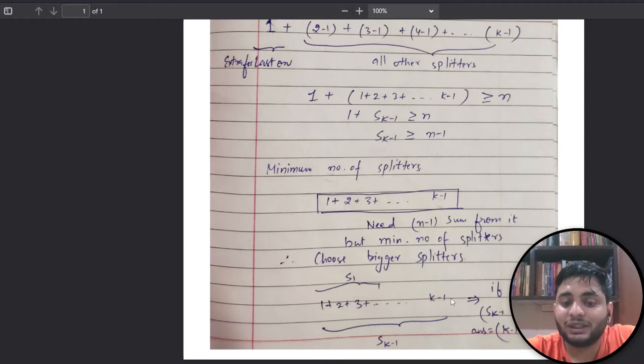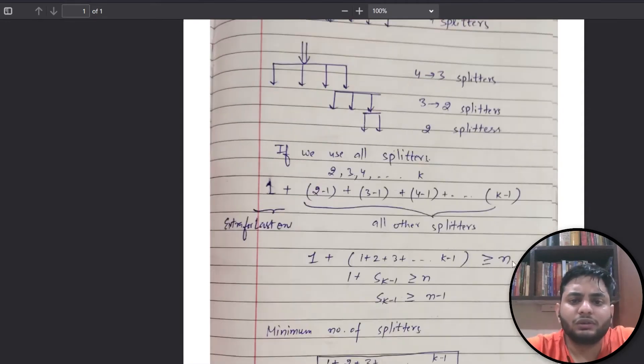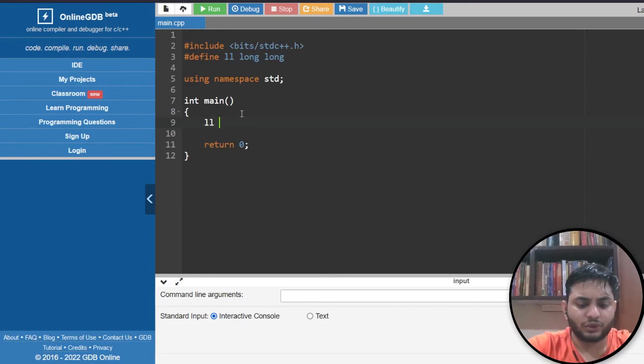The best case would be when the sum equals n because that way I would utilize the minimum number of splitters. I have a series and I need to check at each point whether I need to increase or decrease the range. This is a simple binary search. If S of k minus 1 minus S1 equals the requirement, then answer is k minus 1 minus the point. Otherwise it's mid plus 1 distance between them.